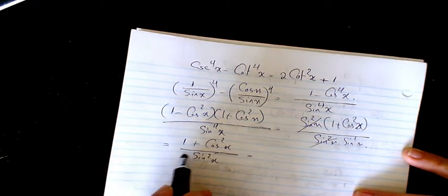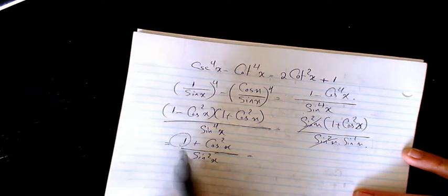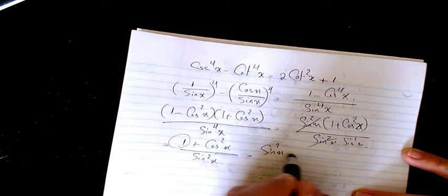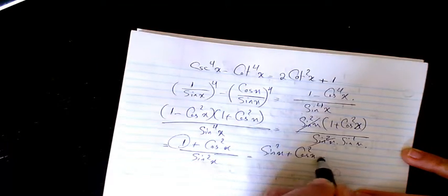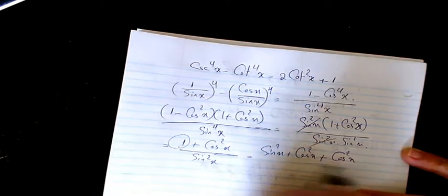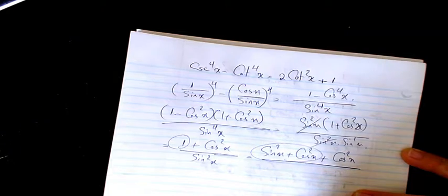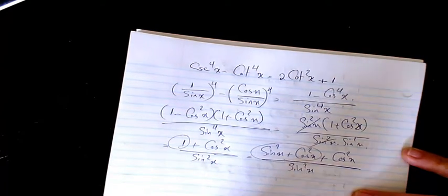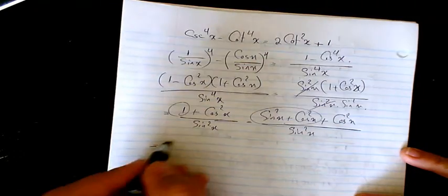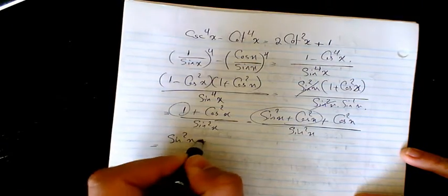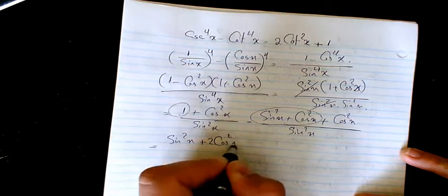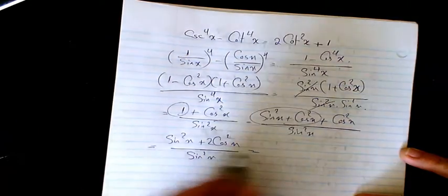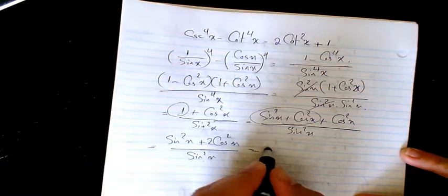One more step: convert the 1 to sine squared plus cosine squared. So instead of 1, I write sine squared plus cosine squared divided by sine squared x. That gives us sine squared x plus 2 cosine squared x divided by sine squared x.